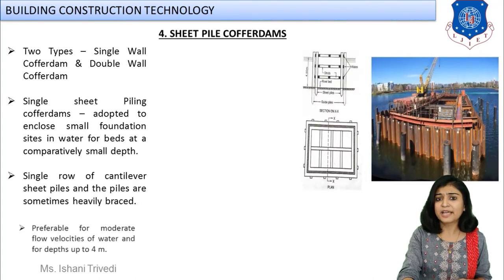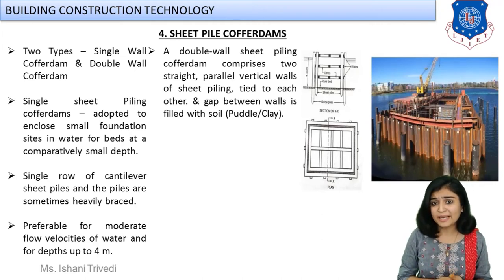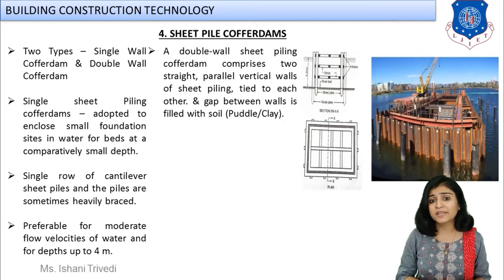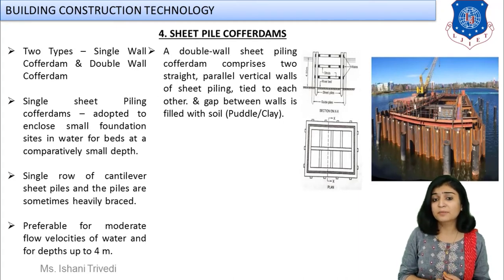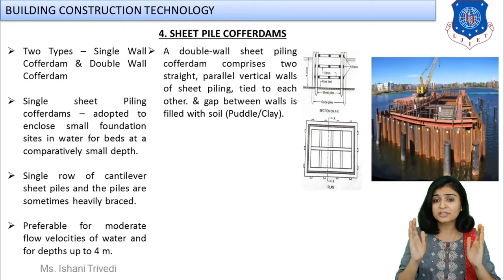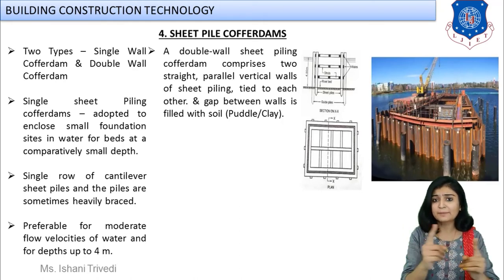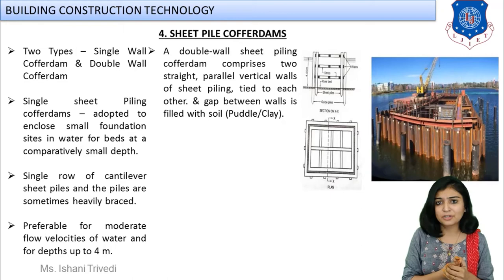Next we have sheet pile cofferdams. You know what sheet piles are from pile foundation studies — they are non-load-bearing piles, generally made of steel or timber, and are long slender members. They are used to protect your structure from the effect and seepage of water and from overtopping. If you construct a full box-like structure by inserting sheet piles, enclosing that space and making your area safe from external water, it is known as a sheet pile cofferdam.